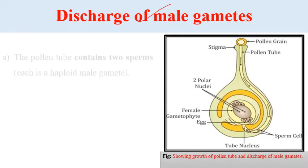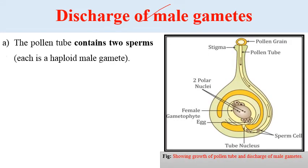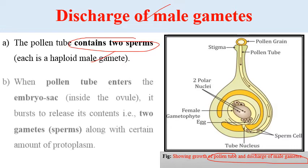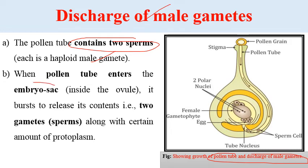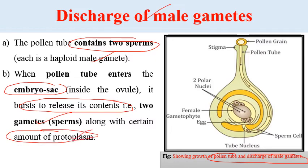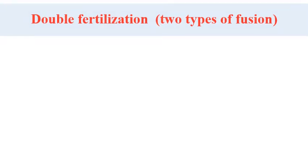The pollen tube contains two sperms, each a haploid male gamete. When the pollen tube enters the embryo sac inside the ovule, it bursts to release its contents - that is, two male gametes or sperms - along with a certain amount of protoplasm.